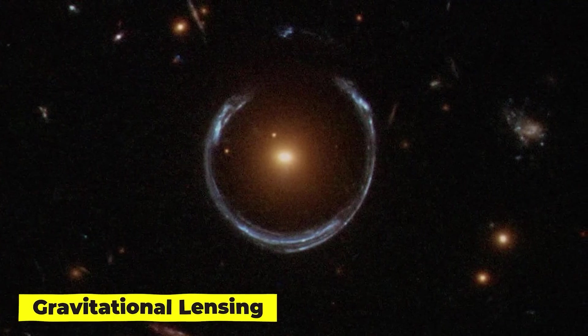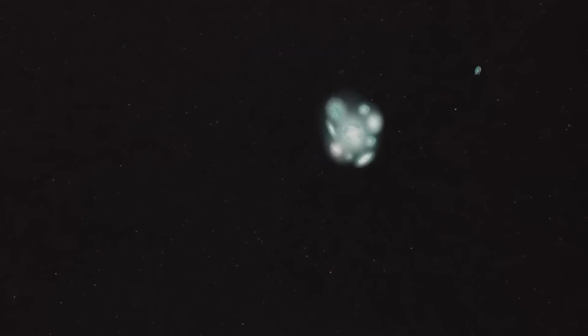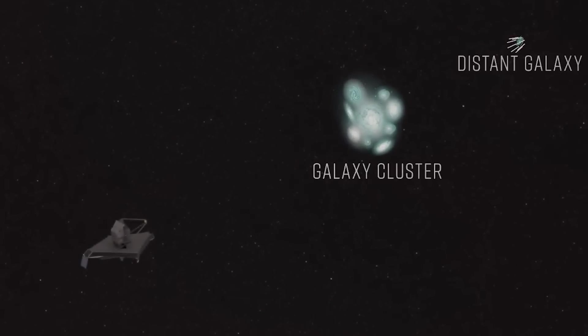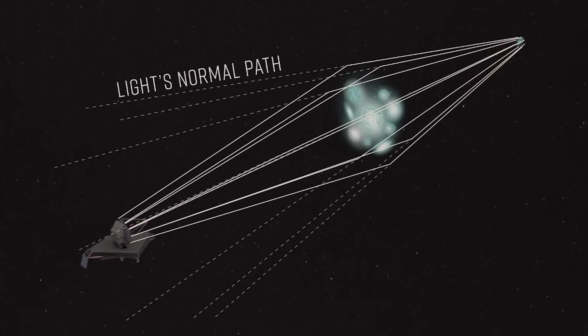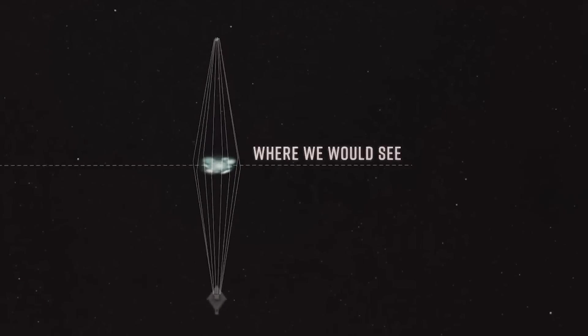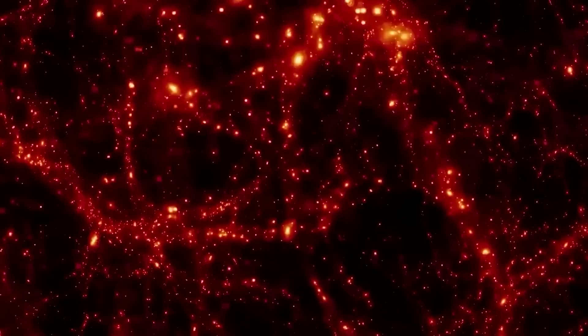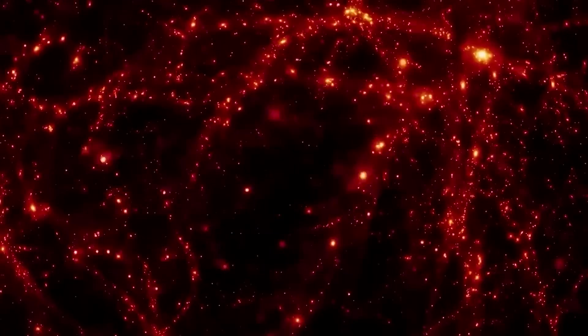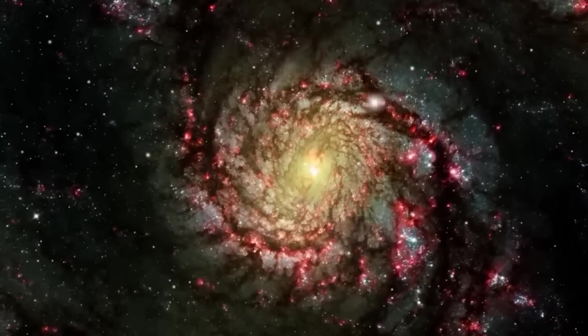Gravitational lensing provides more support for the existence of dark matter. When the gravitational pull of a large object, like a galaxy, bends the course of light from a far-off object, like a quasar, it is said to be gravitational lensing. This light bending can produce several images of the far-away item or even a ring of light surrounding the large object. Scientists can determine an object's mass by monitoring the gravitational lensing effect, since the degree of bending is dependent on the mass of the object. The calculated mass is frequently significantly more than the object's apparent mass, which raises the possibility of dark matter.